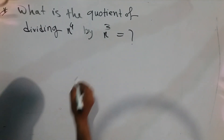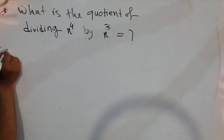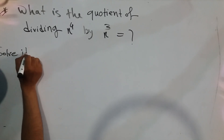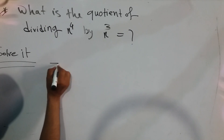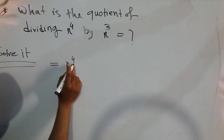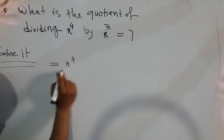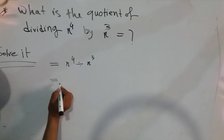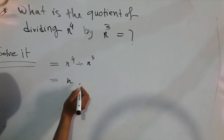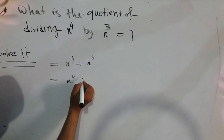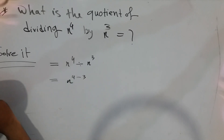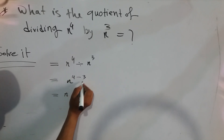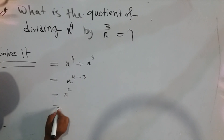We can solve it now, following this board. We write down x to the power 4 divided by x to the power 3. Applying the exponent rule, we write x to the power 4 minus 3, which equals x to the power 1.